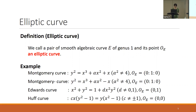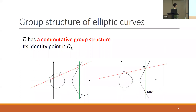An important property of fd-curves is that they have a commutative group structure, and the identity point is O_E. This image represents the group operation for the case of a Montgomery curve. For points P and Q, we can set P plus Q and the negation of P, and this operation becomes a commutative group operation.